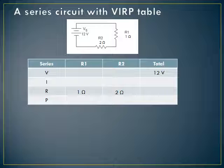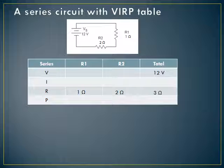Think about it as a school day: if you had to take two tests back to back, the total resistance would be more than just one test. If you have a test level 1 and another test level 2, the total difficulty of the day is level 3. In a series circuit, the total resistance is the sum of the individual resistances. Now that we have two values in the total column, we calculate I — I equals V over R, so 12 over 3 gives 4 amps — and power equals I times V, so 48 watts.